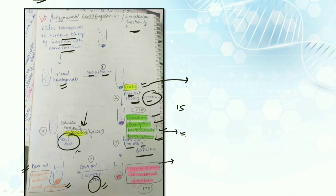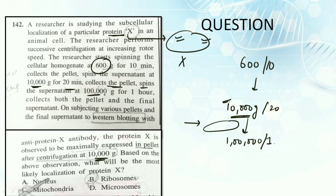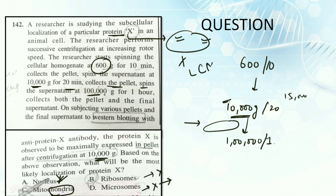The researcher is performing differential centrifugation to understand where protein X is localized. After the complete process, protein X is maximally expressed after 10,000 g. As discussed, after 10,000 g - which is almost near to 15,000 g - in the second step we have lysosomes, chloroplasts, mitochondria, and peroxisomes being removed. The nucleus is incorrect because it is the first organelle removed. Ribosomes are removed in step three. Microsomes are also removed in the last steps. The correct answer is mitochondria, as it is the only option present among the organelles sedimenting at that speed.